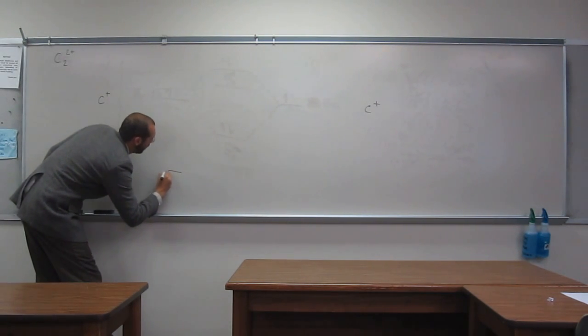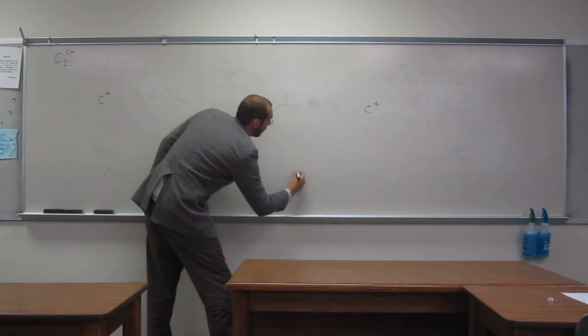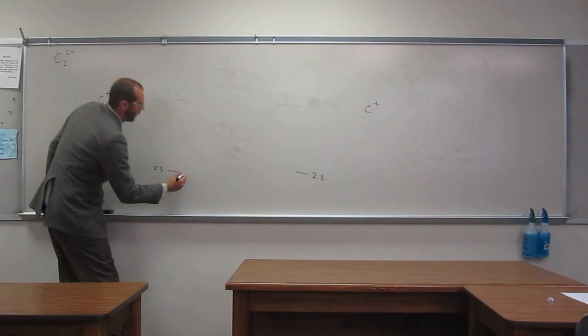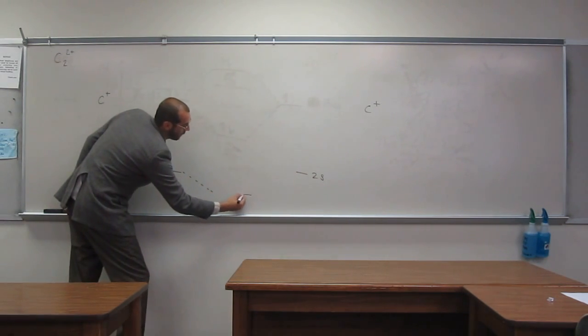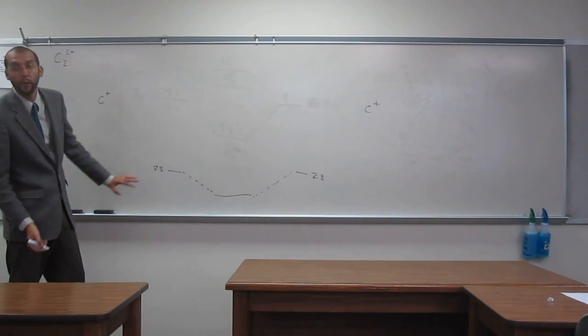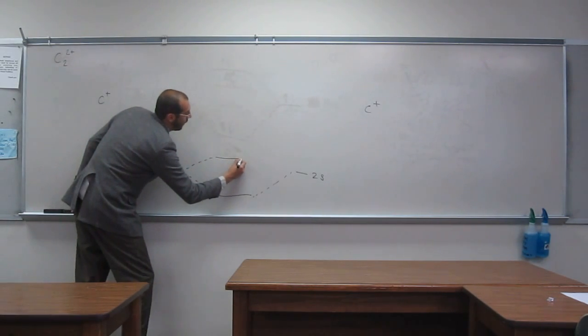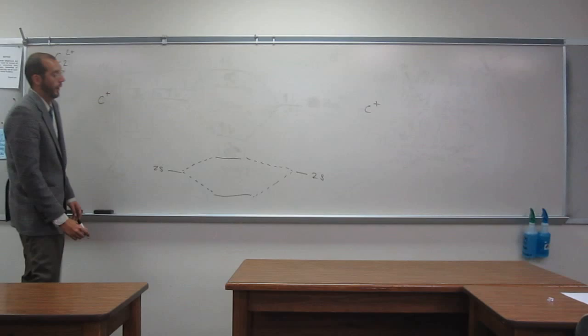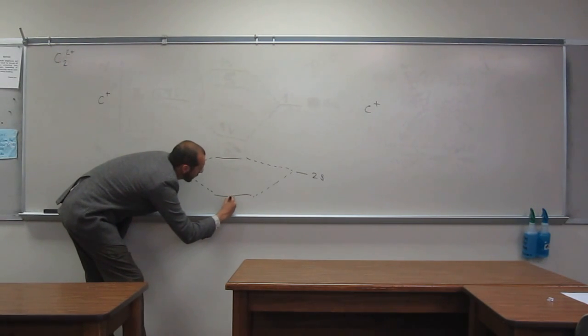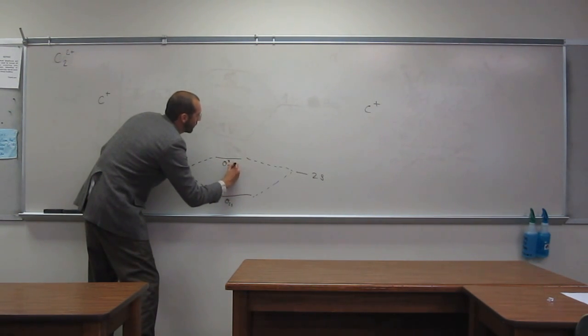So at the bottom here, we've got the 2s orbital of the carbon and the 2s orbital of the other carbon. And then we show the bonding orbital. And again, like I was saying, I don't have very much room on this board, so it's going to be really kind of flat. An anti-bonding orbital, so we call this the sigma 2s orbital, sigma star 2s orbital.